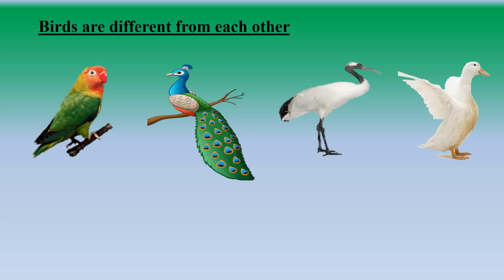Do all birds look the same? No, they are different from each other. Look here — you can see many birds. Their size, body shape, beaks, feathers, legs, and even claws may be different in shape. Here you can see a parrot — it is green in color and has a red beak. But this peacock's color is different; it has more colorful and long feathers.